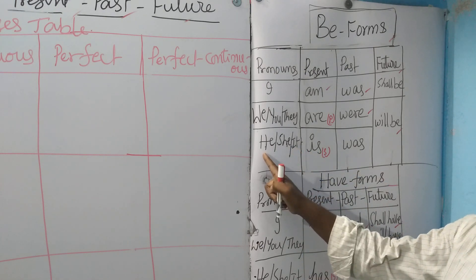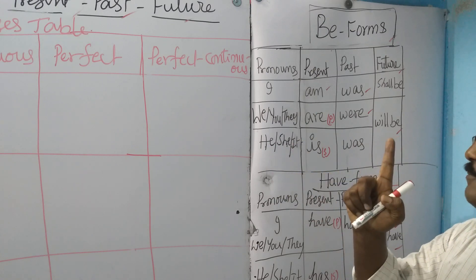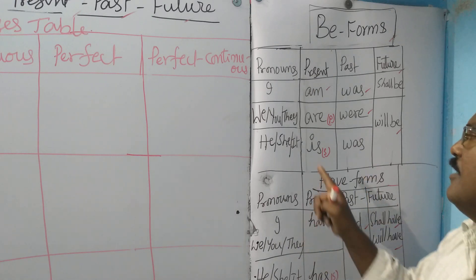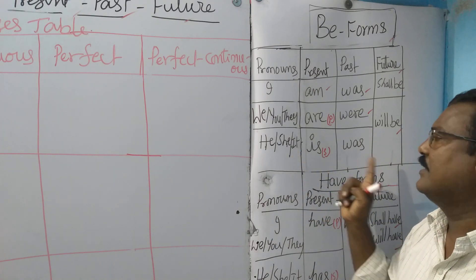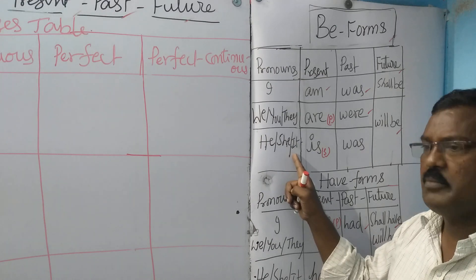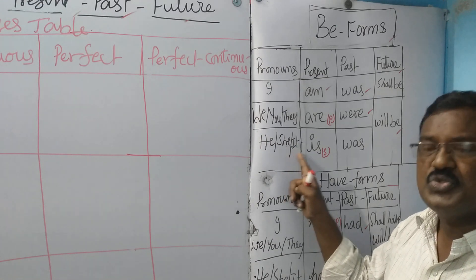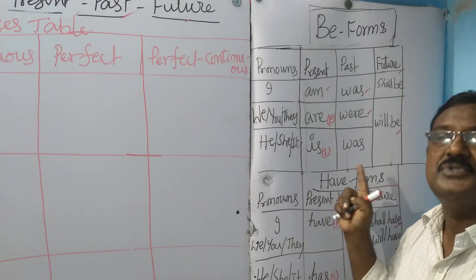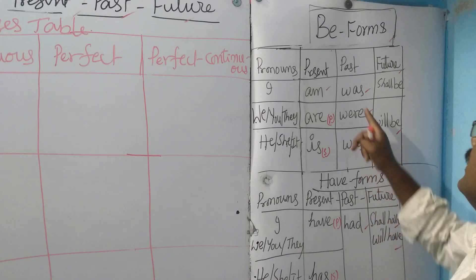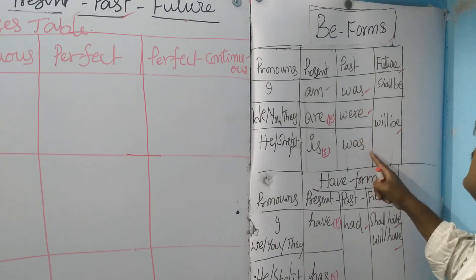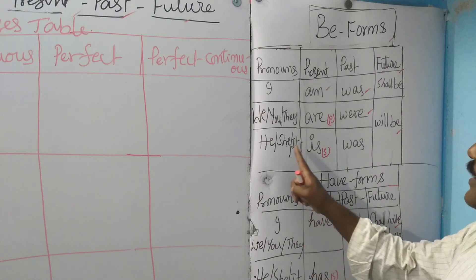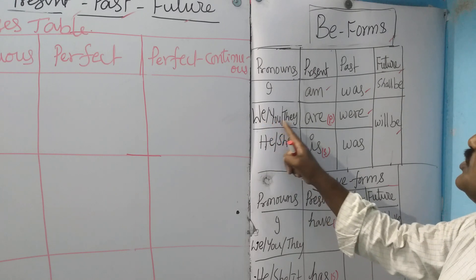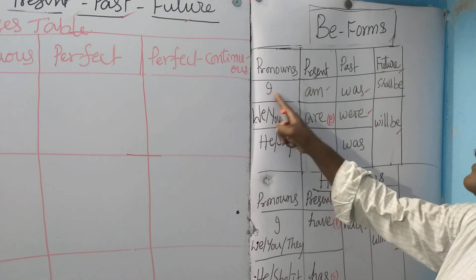He, she, it — singular subjects. 'Is' is singular B form. We, you, they — plural subjects, 'are'. Separately, 'I' takes 'am'. Past tense: 'I', 'he', 'she', 'it' — all take 'was' (singular); 'we', 'you', 'they' — 'were' (plural). Future tense: shall be, will be.